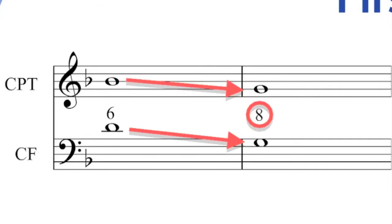A direct octave or fifth occurs when you move in similar motion to an octave or a fifth. That's all there is to it. If you move in similar motion to an octave or fifth you have a direct fifth which is not permitted.